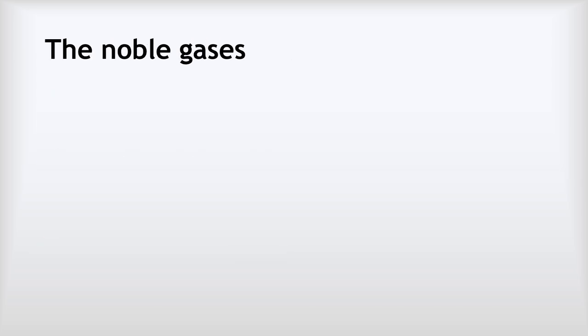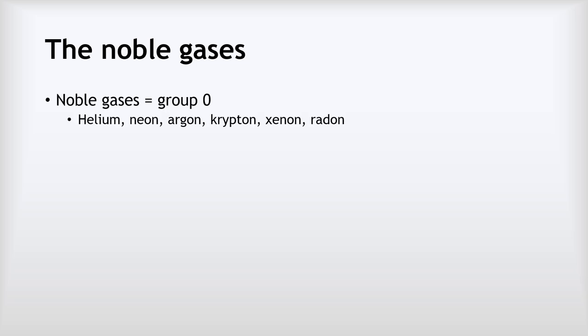So what are the noble gases? The noble gases are the gases in group zero of the periodic table, which is helium, neon, argon, krypton, xenon, and radon. We're going to just concentrate on the first three though.